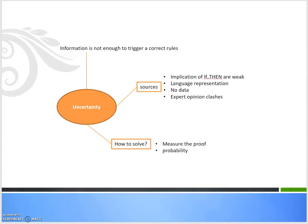What happens if there is conflicting information or knowledge? These are the sources of uncertainty. It can be because information is not enough to trigger correct rules, or the implication of our if-then rules is weak. It can also be caused by language representation issues, where the knowledge we extract is not suitable with the representation we chose.